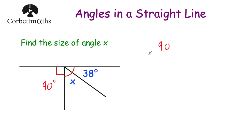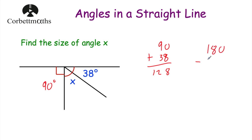So let's do 90 plus 38. 0 plus 8 is equal to 8, and 9 plus 3 is equal to 12, so that's equal to 128 degrees. So 38 degrees plus 90 degrees is 128 degrees. Now we'll do 180 degrees subtract 128 degrees. 0 take away 8 we can't do, so cross off the 8 and call that 7, and now that's 10. 10 take away 8 is 2, 7 take away 2 is 5, and 1 take away 1 is 0. So x is equal to 52 degrees.